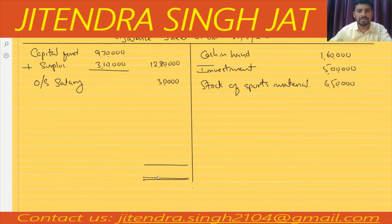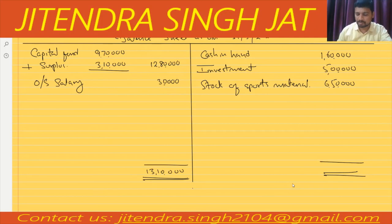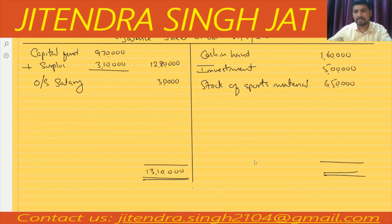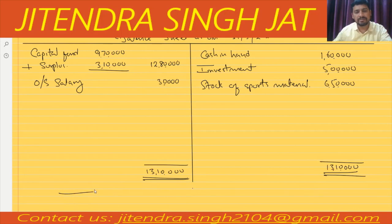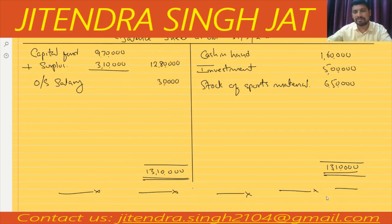The total of the liability side is 12,80,000 plus 30,000 equals 13,10,000. The total of the asset side is 1,60,000 plus 5,00,000 plus 6,50,000 equals 13,10,000. Both sides are equal — the balance sheet balances. This was a very good question. I hope everything is clear to everyone. Thank you very much.